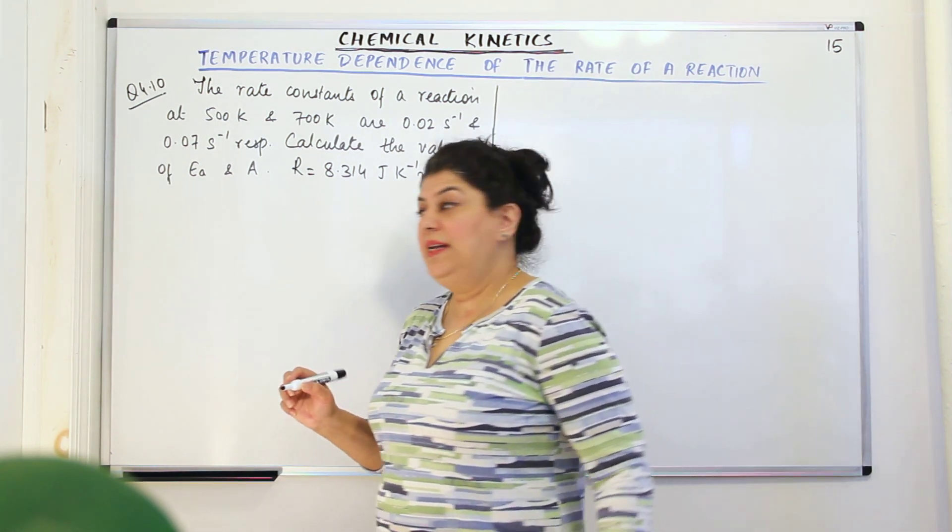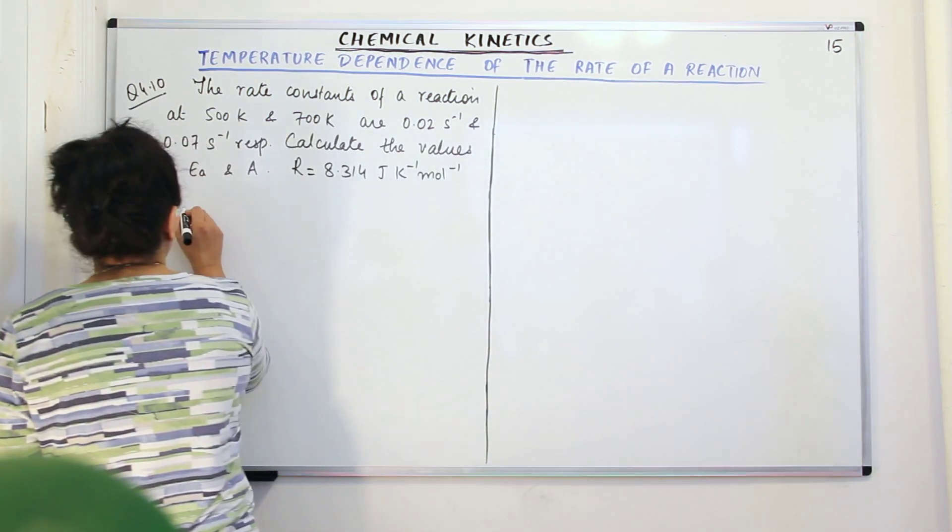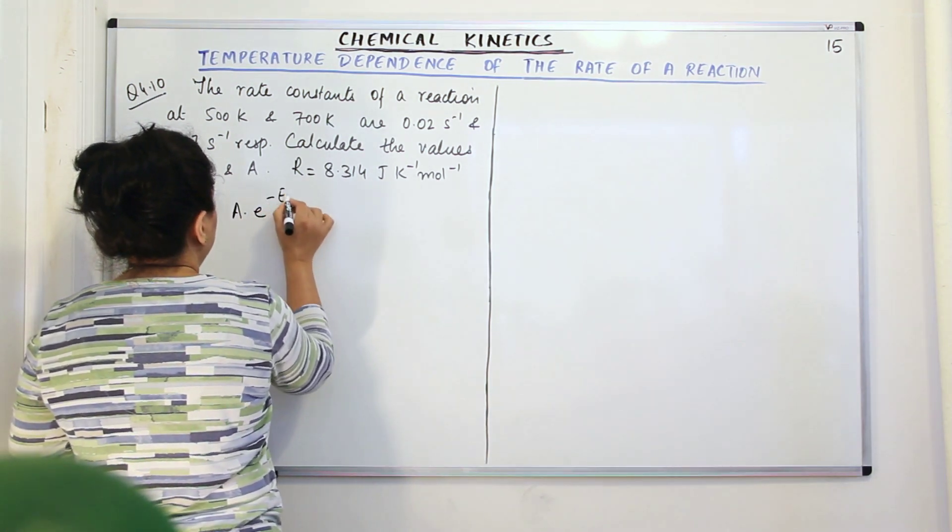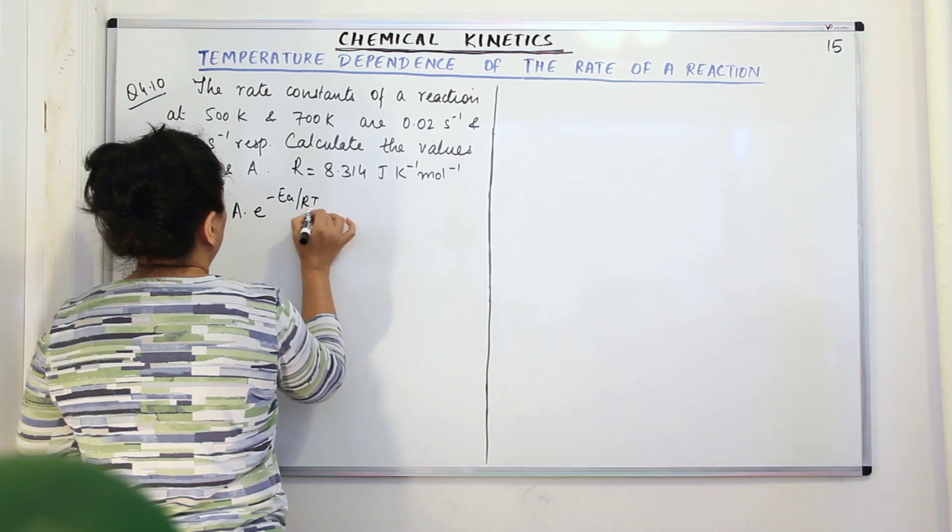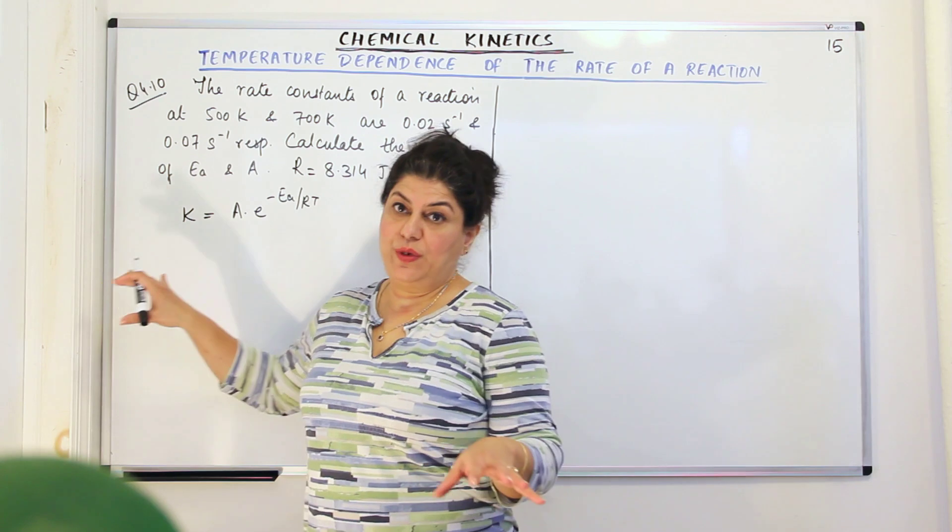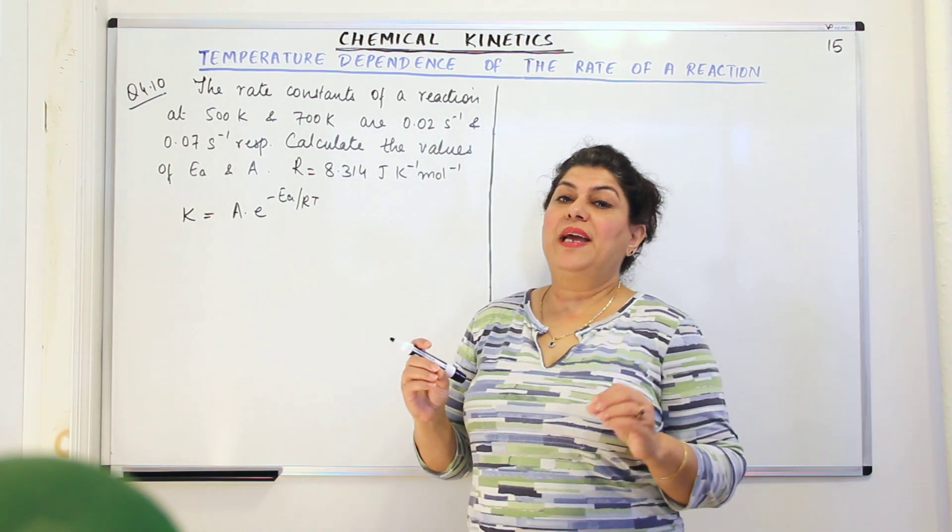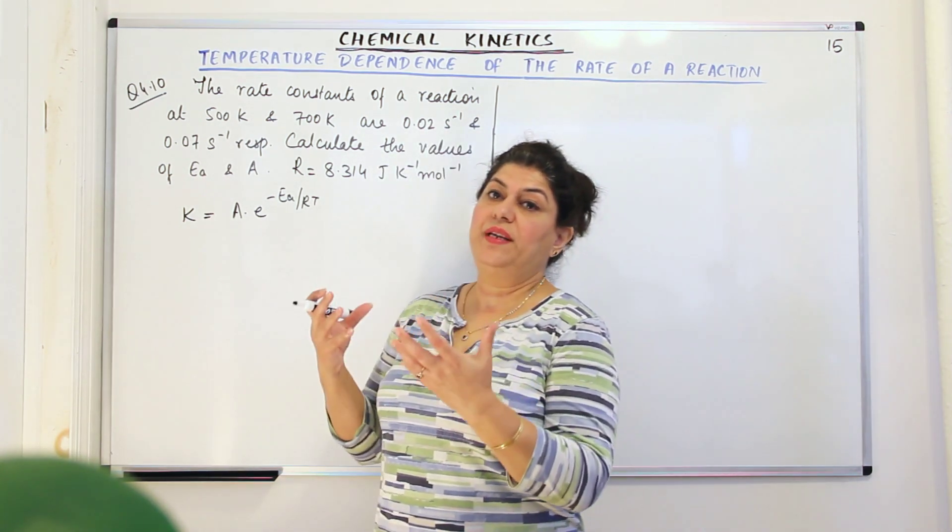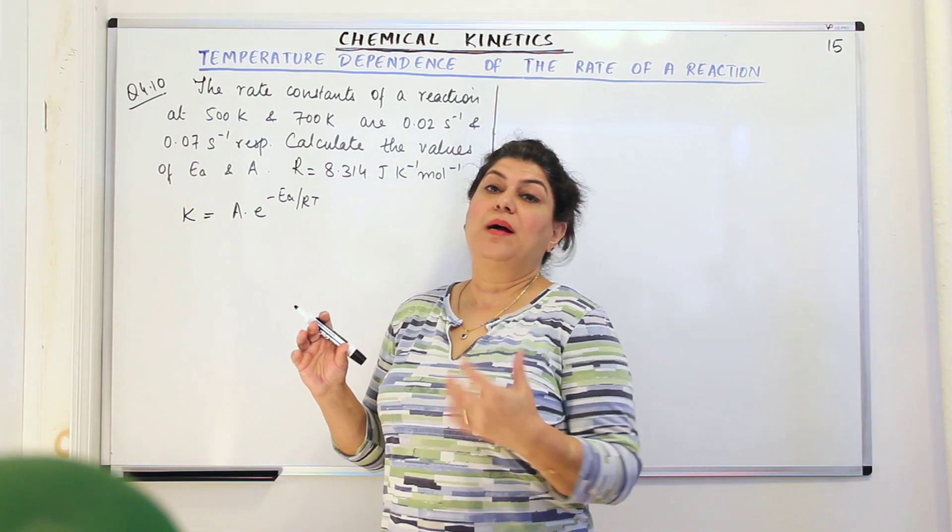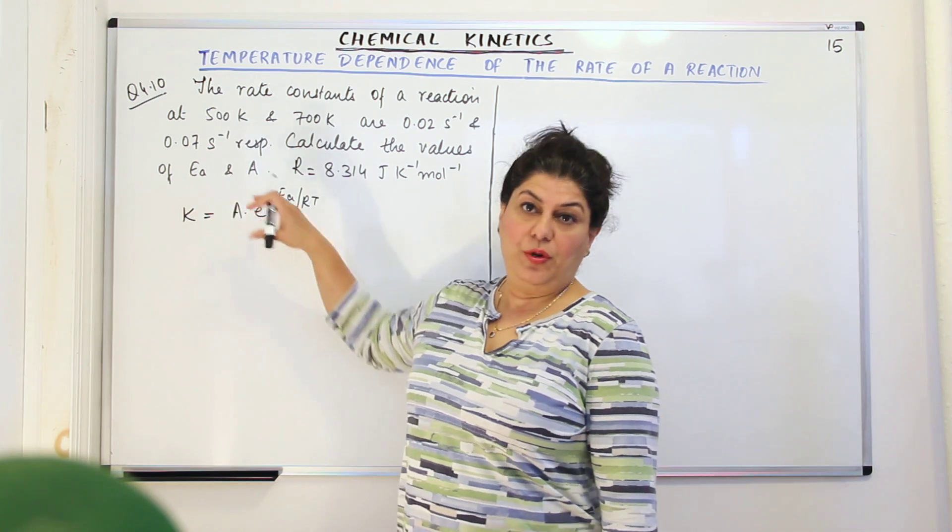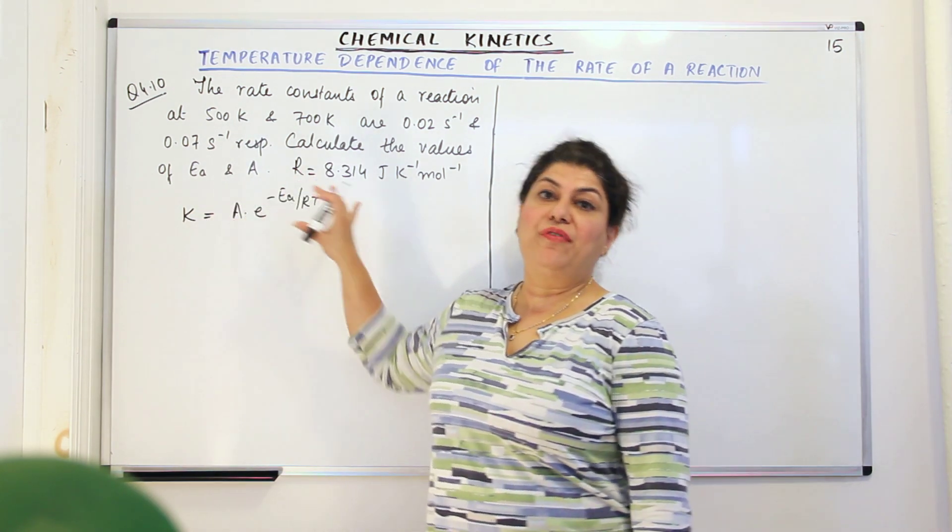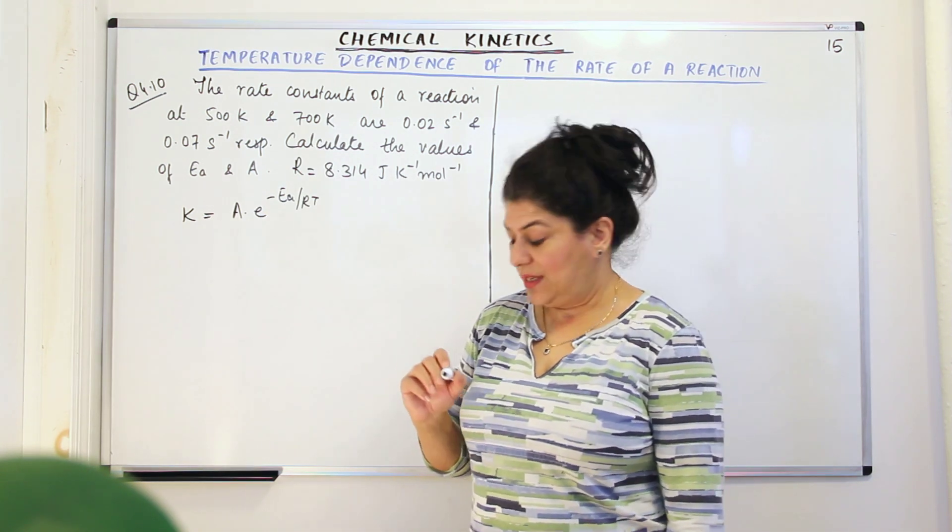According to Arrhenius equation, rate constant K is equal to A into e to the power minus Ea upon RT. As I explained in the previous video, when we have a chemical reaction with readings at temperature T1 and T2, the rate constants will become K1 and K2, and then taking log on both sides and subtracting one equation from the other, we get a modified version of this Arrhenius equation.